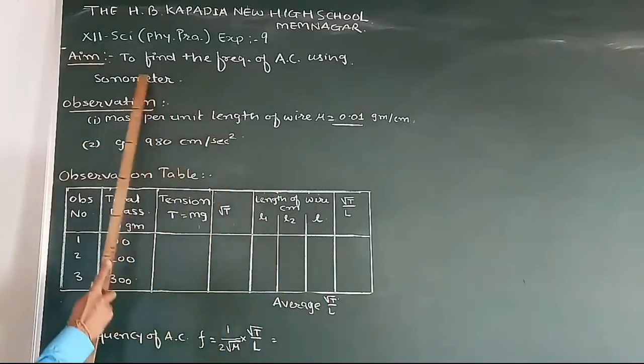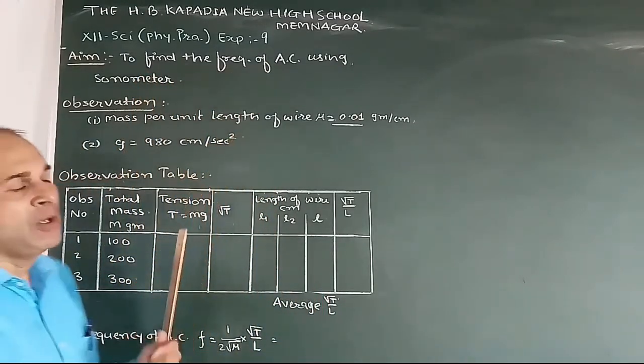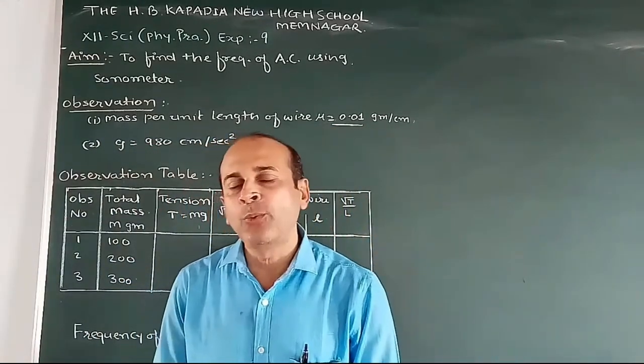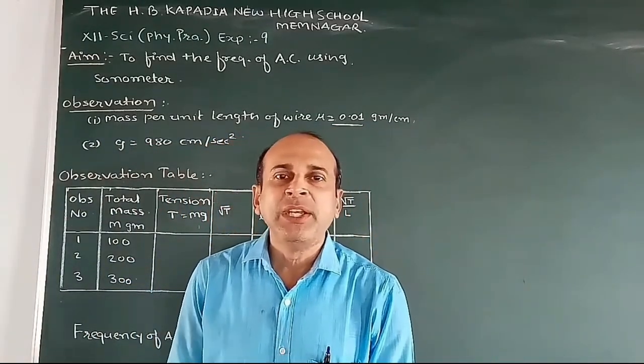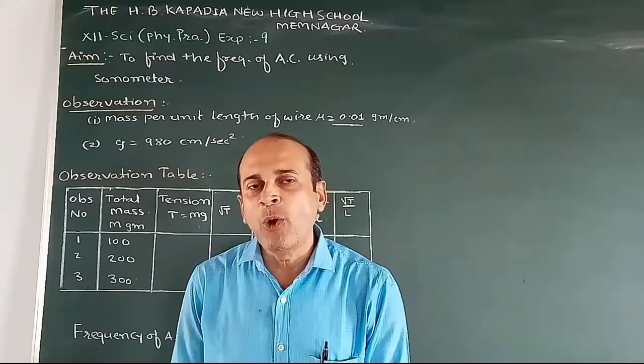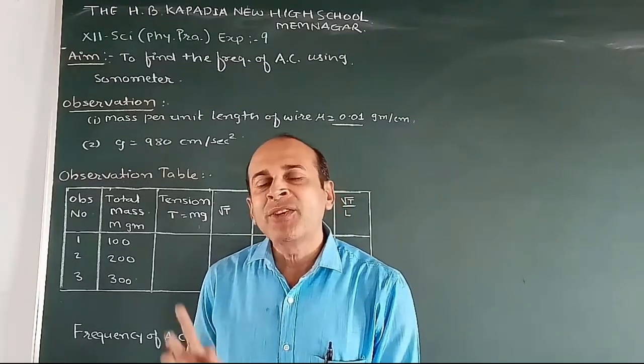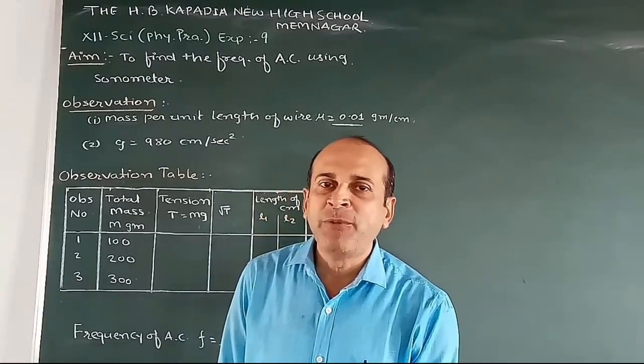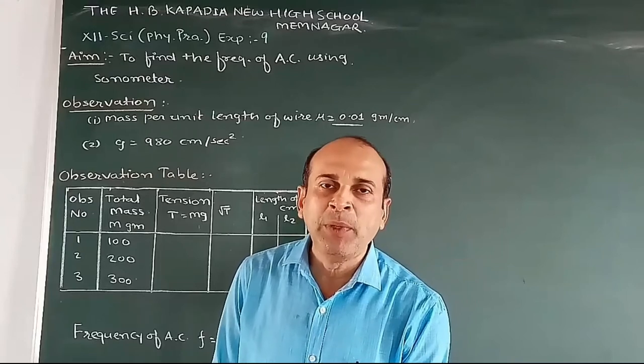Our aim is to find the frequency of AC using sonometer. As we know, there are two types of electricity: DC and AC, that is alternating current. The power supply of current in domestic use is AC. So let me find the frequency of AC using sonometer.